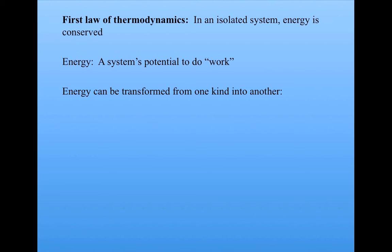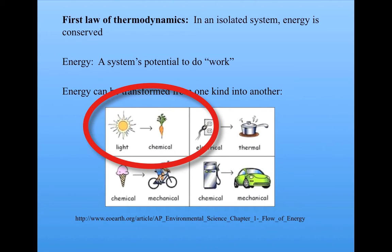Energy can take on different forms, and it can be transformed from one form into another. Here are a few examples. Energy from sunlight can be transformed into chemical energy in plants via photosynthesis. Electrical energy can be transformed into thermal energy. That's how your electric heaters or stove work. Chemical energy from foods or fuels can be transformed into mechanical or kinetic energy that we use to move via our muscles or our vehicles.